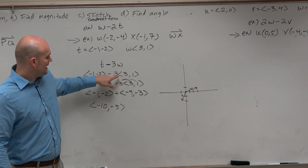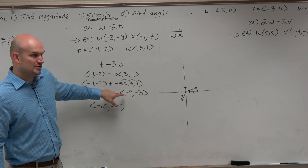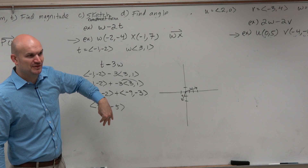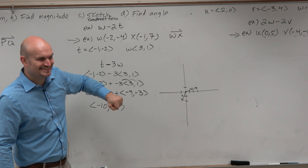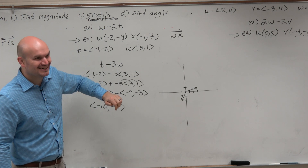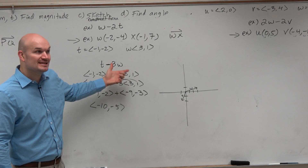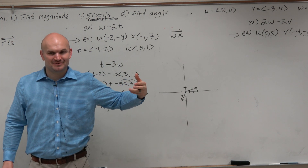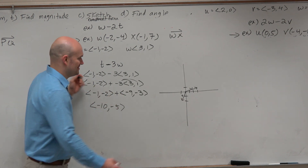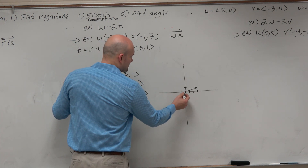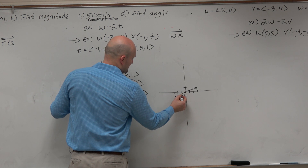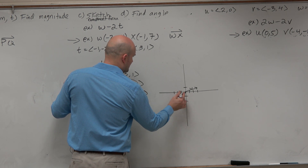Notice that when I multiply by a negative, what does that do? That reflects it, right — about the origin, the x and the y-axis. Which is kind of similar to odd functions. So if I'm going to do negative w, that's going right 1, 2, 3, then down 1. So this would be negative w.